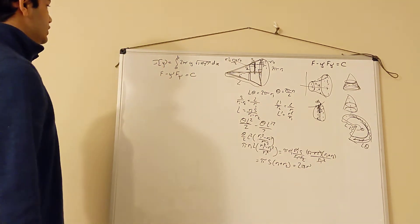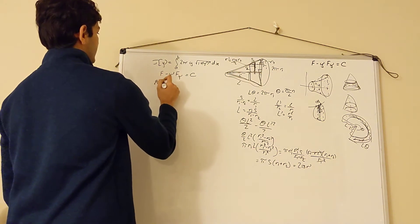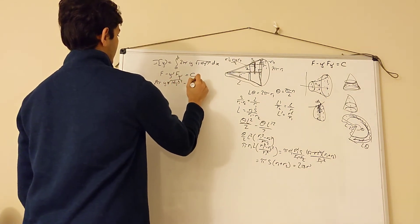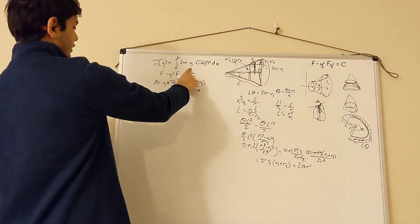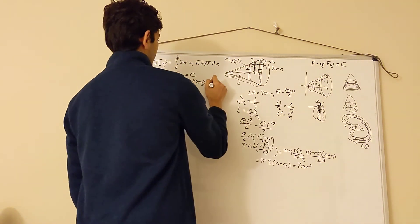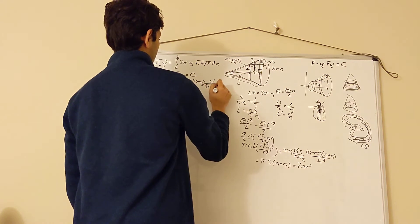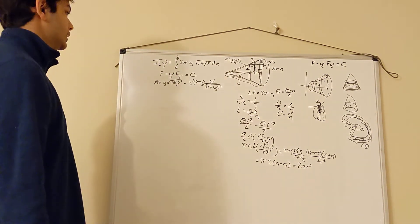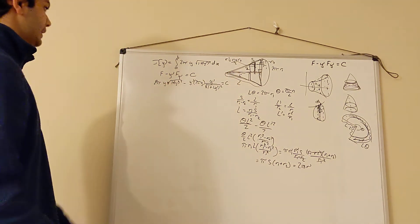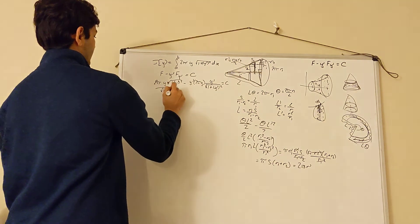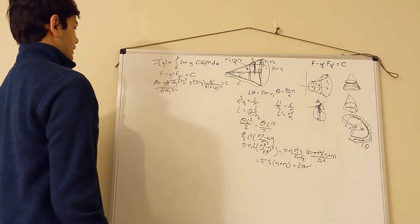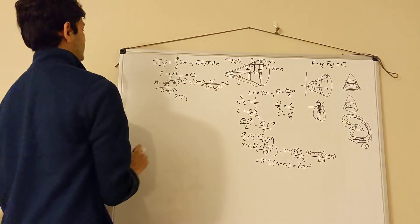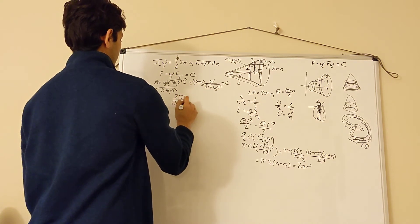Using the Beltrami identity, F − y'·(∂F/∂y') = constant. With F = 2π·y·√(1 + y'²), we compute ∂F/∂y' = 2π·y·y'/√(1 + y'²) (treating y as constant). Substituting and combining fractions, the y'² terms cancel and we get 2π·y/√(1 + y'²) = C.